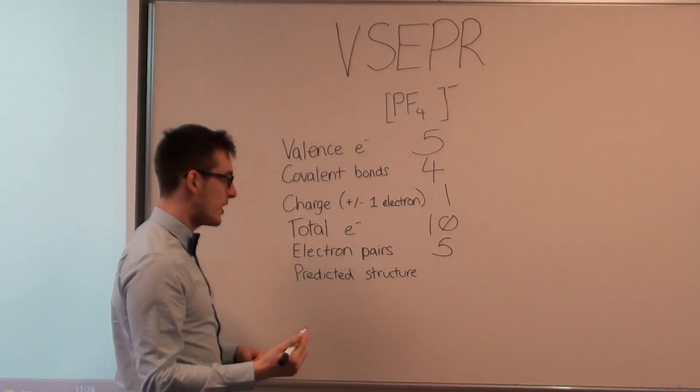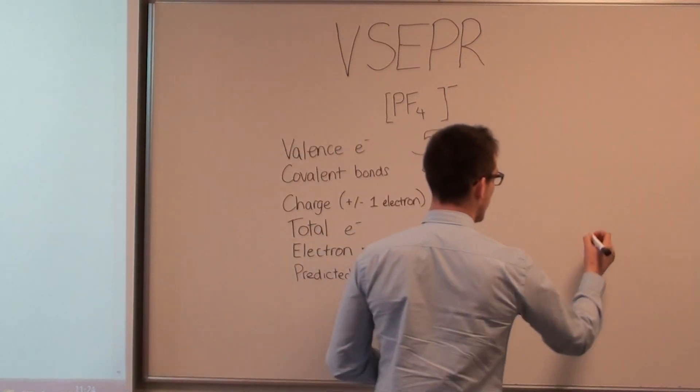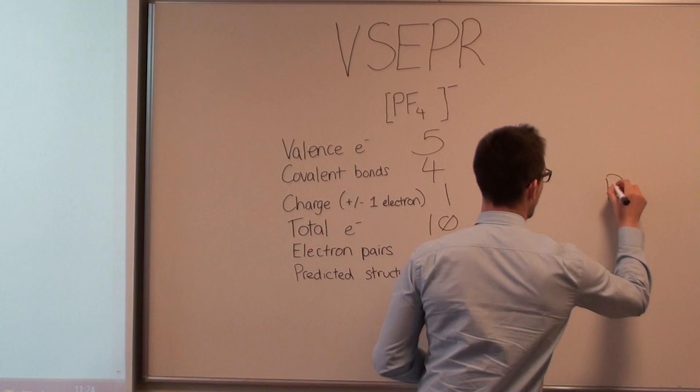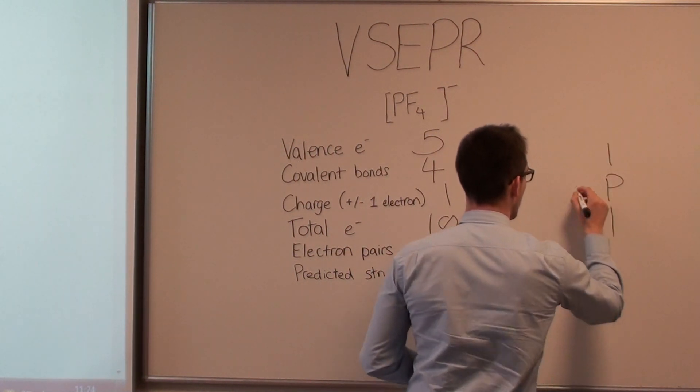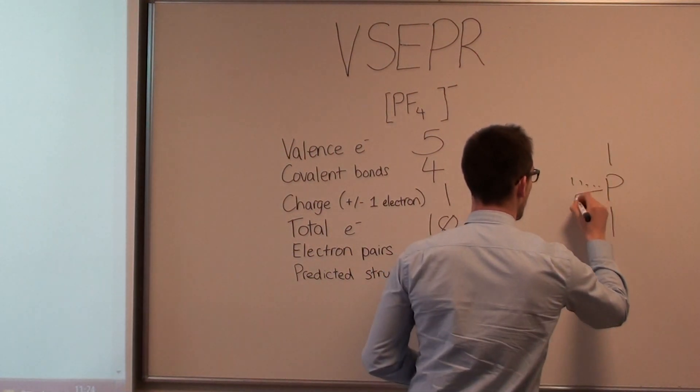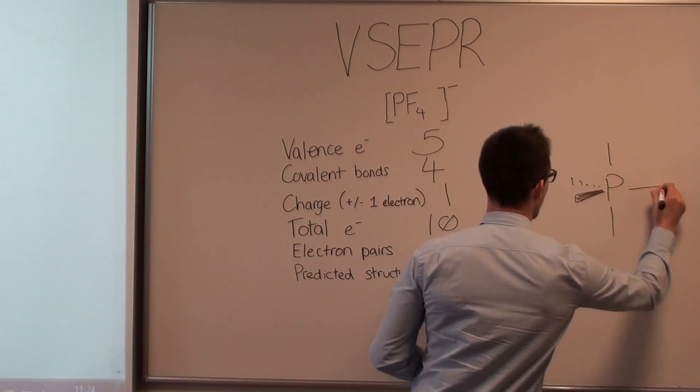This gives us a predicted shape of trigonal bipyramidal. Let's draw that out. There we go.